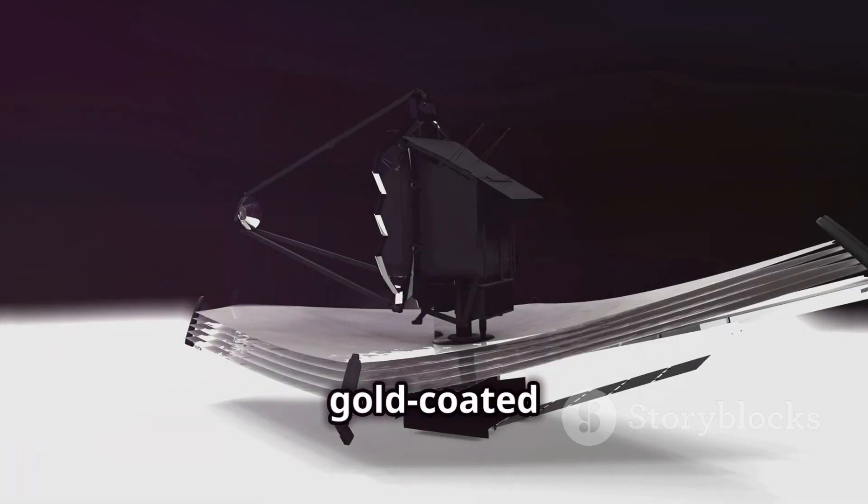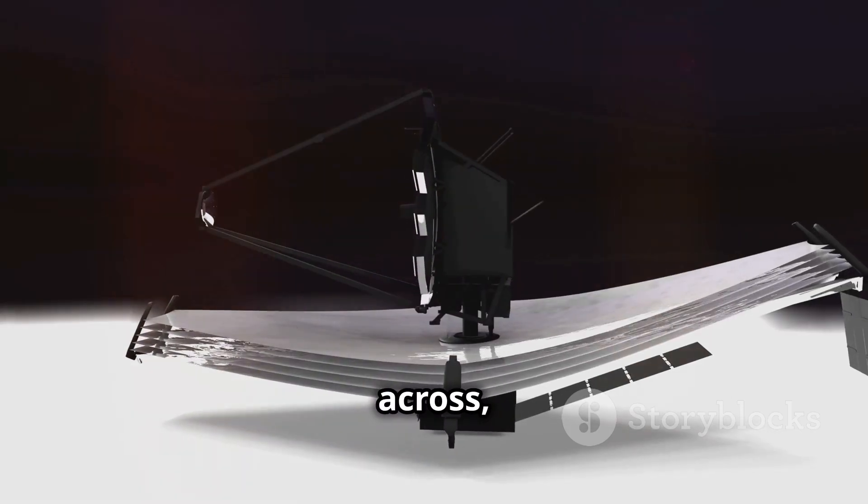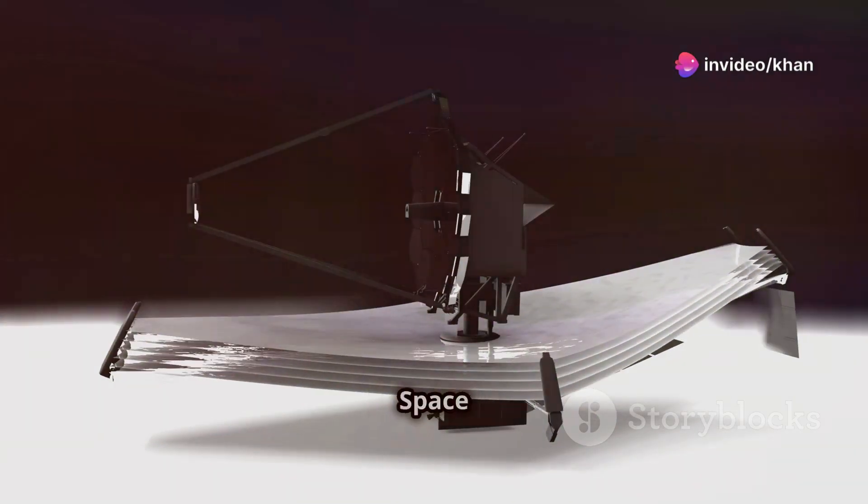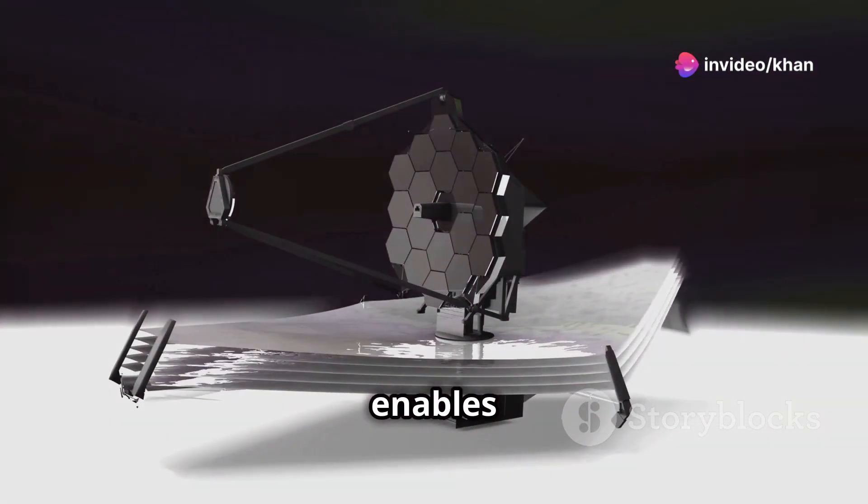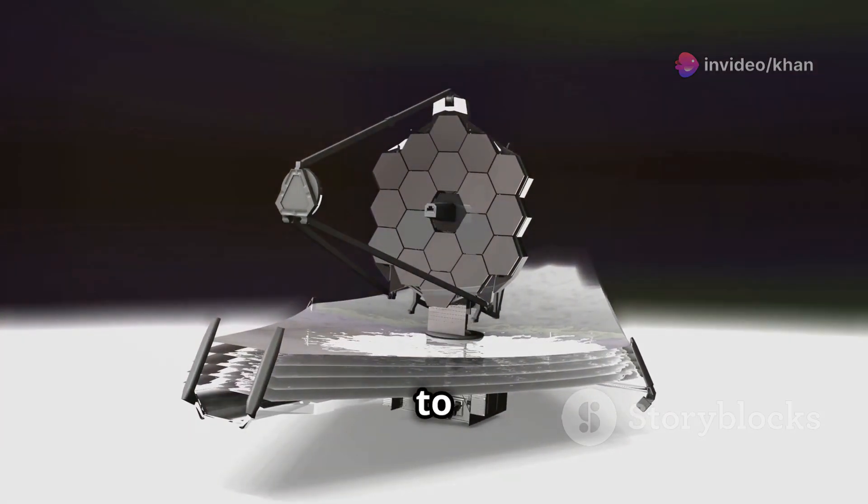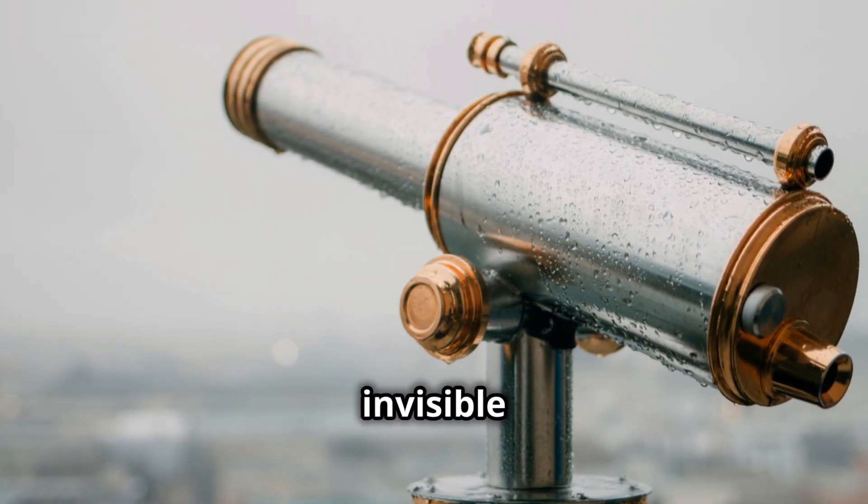Its massive gold-coated mirror spanning 6.5 meters across collects far more light than the Hubble Space Telescope. This enables Webb to reveal fainter, more distant objects and to capture details that were previously invisible to us.